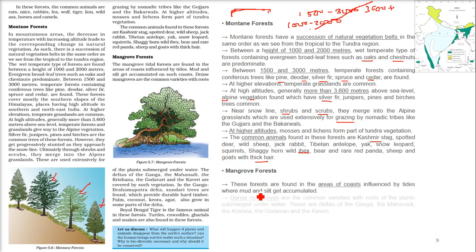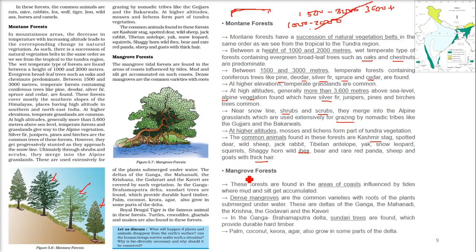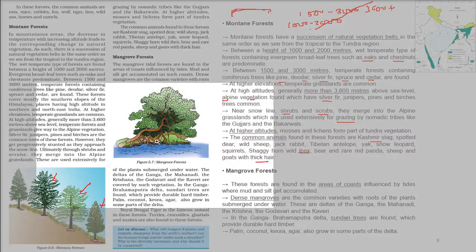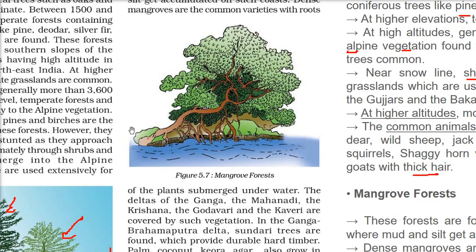Mangrove forest — as the name suggests, this forest is based on mangrove trees. The roots of mangrove trees are inside water. There is soil brought by tides, along with sand, and the trees grow here. When there are many such trees together, we call it a mangrove forest, generally found in coastal sea areas.